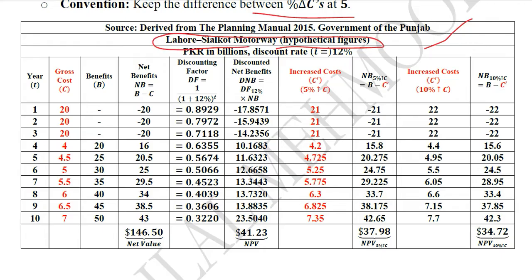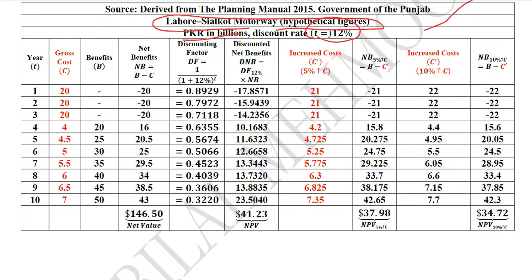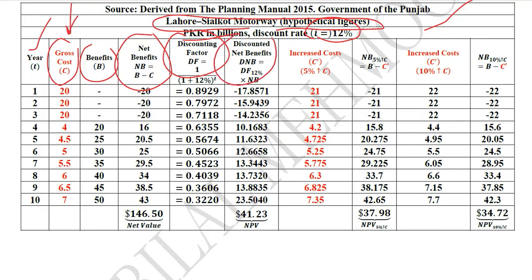This is the same example used before — hypothetical figures for the Lahore CIL coach motorway with a discount rate of 12%, and the data is in PKR billions. The first column is years, the second is gross benefit cost, and the third is the benefits column. We focus on the gross cost column because we want to change the cost. This is the original calculation of net benefits, the original discounting factor, and the original discounted net benefits, which gives us an NPV of 41.23 currency units.